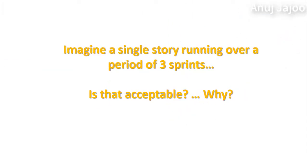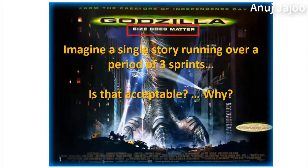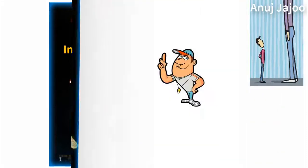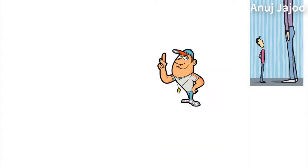The next attribute is Small. Imagine a story running over a period of three sprints — is that acceptable? The story size does matter. It affects planning. The very purpose of the iteration is to get review comments — if there is nothing to show at the end of every sprint, there is nothing to demonstrate. How to split a story into an appropriate size? I am going to discuss the art and science of splitting a story in the next chapter. Thank you for watching. Please leave your feedback and comments, and you may subscribe to the channel for future updates.